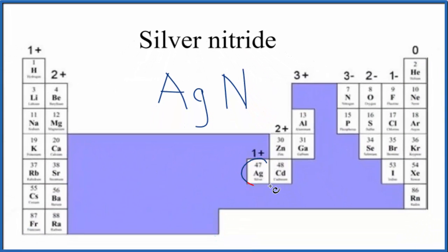So silver's here with the transition metals, but it's a little bit of an exception. It's always 1+. So we have the 1+ ionic charge for the silver, and then nitrogen over here, group 15, sometimes called 5A. We have the 3-.